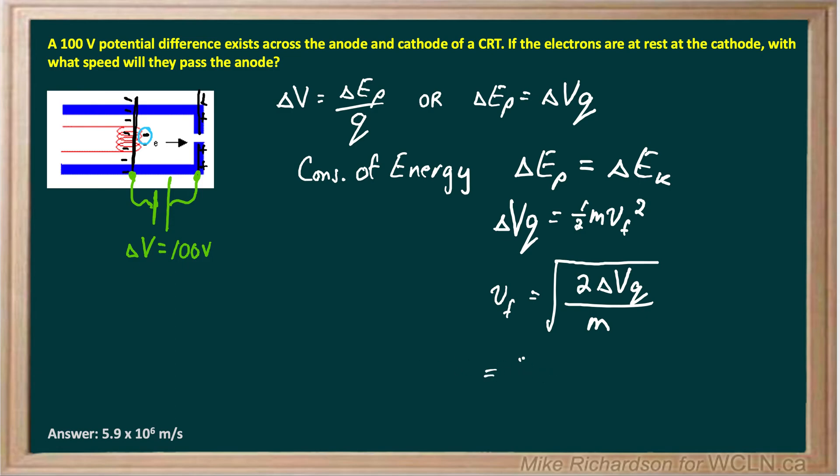If I put in my numbers, my change in voltage is 100. The charge in question is an electron, the elementary charge, 1.6 times 10 to the negative 19 coulombs. And the mass would be the mass of an electron, which is 9.11 times 10 to the negative 31 kilograms. And all of that we want to take the square root of.